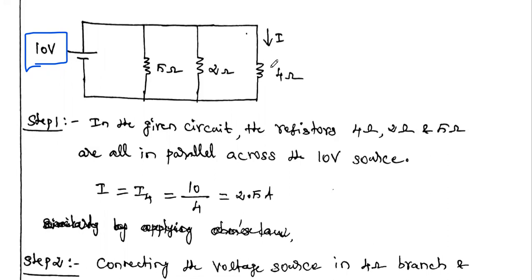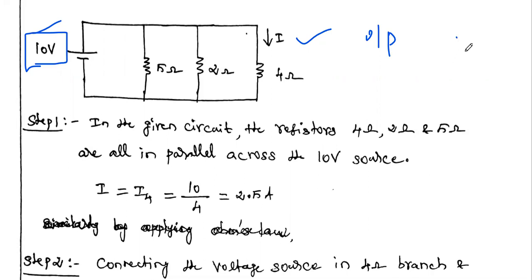The question asks for the current flowing through this 4 ohm resistor, so this current I is the output — this is our response, and the 10V source is our excitation. So we have to verify the reciprocity theorem. According to the reciprocity theorem, in the first step, because of this input, find what current flows through the 4 ohm resistor, then find the ratio V divided by I — where V is the input voltage and I is the output current.